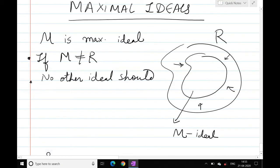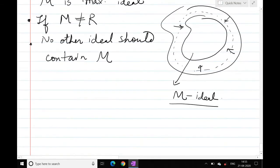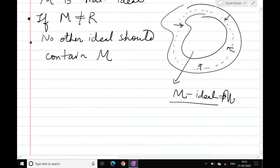You cannot find an ideal which is larger than M, you should not be able to find such an ideal. If such a thing happens, then I will say this M ideal is a maximal ideal.